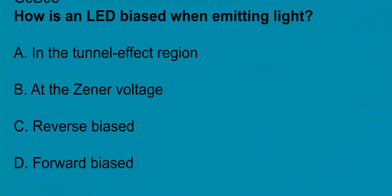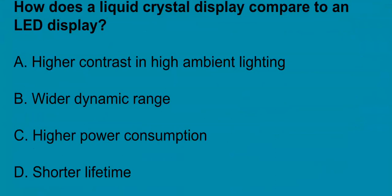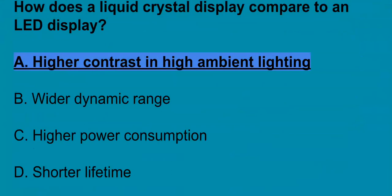G6B08, how is an LED biased when emitting light? Forward biased. An LED light is forward biased. G6B09, how does a liquid crystal display compare to an LED display? Higher contrast in high ambient lighting.